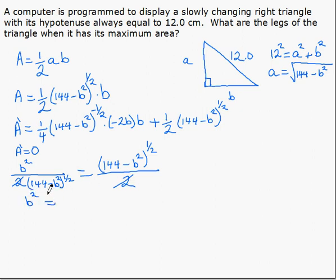equal to, since these brackets are the same, power of a half, a half plus one gives us one, so that is simply 144 minus B squared.